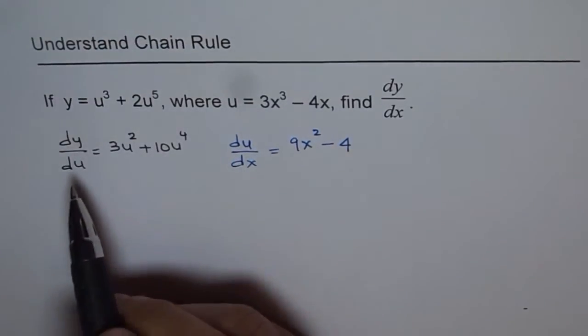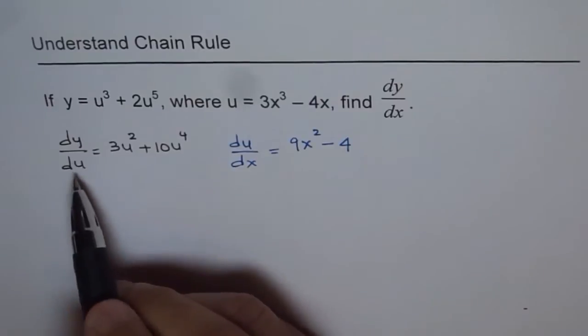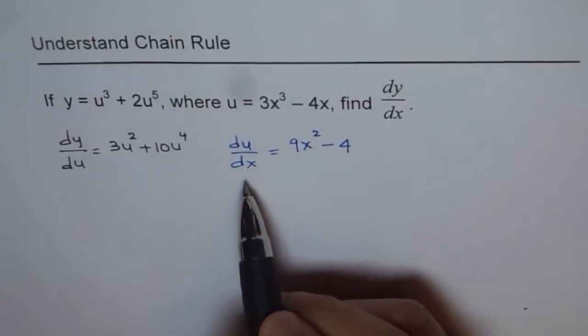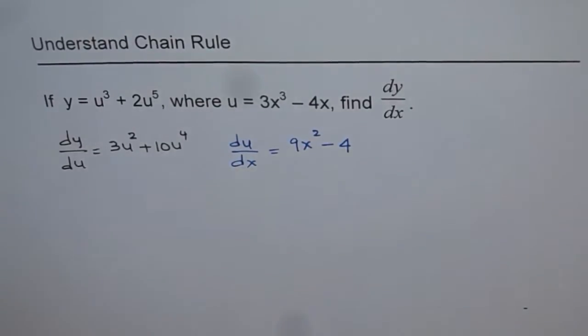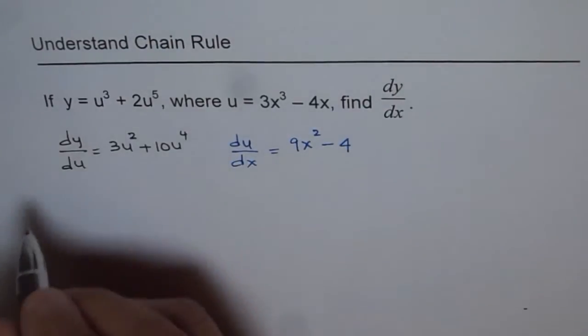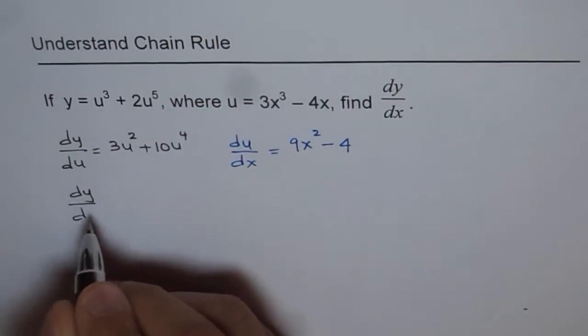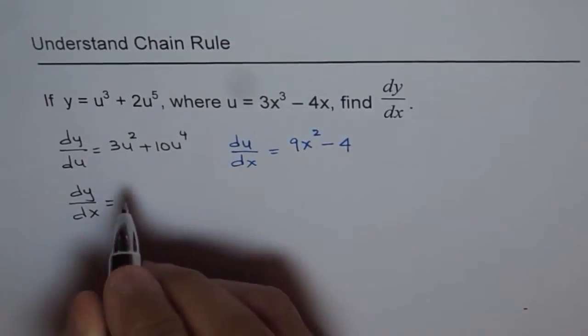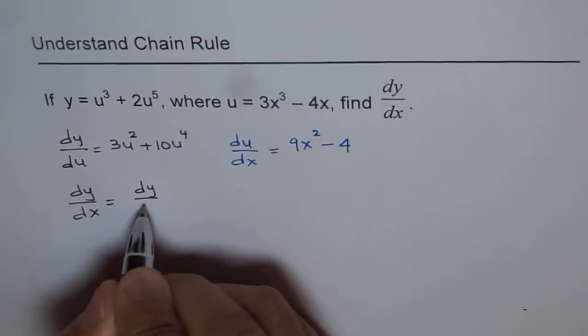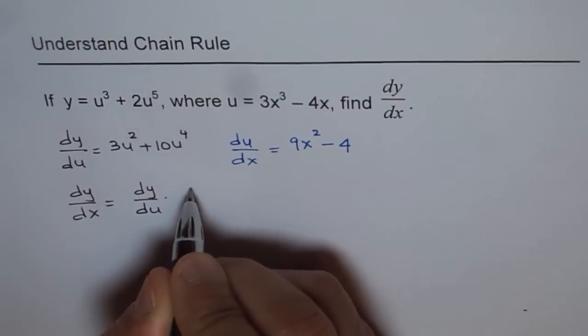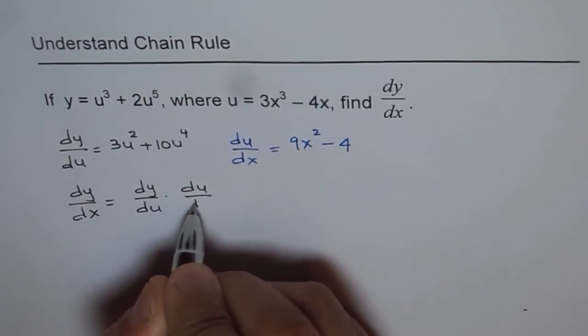We know what is dy by du, and we also know du by dx. To find dy by dx, we can multiply these two. So dy by dx is equal to dy by du times du by dx.